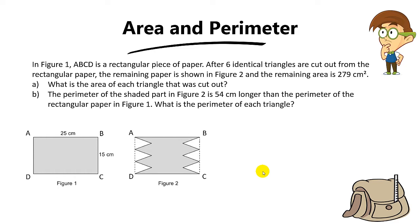The next question is also from the PSLE 2020 paper and this question is testing on area and perimeter. In figure 1, ABCD is a rectangular piece of paper. After 6 identical triangles are cut out from the rectangular paper, the remaining paper is shown in figure 2. The remaining area is 279cm². For part A, they want the area of each triangle that was cut out. Part A is quite straightforward.